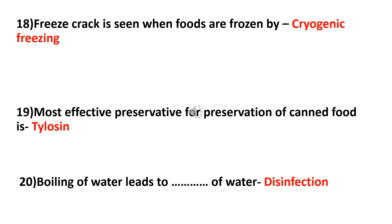Question 19: What is the most effective preservative for the preservation of canned food? Thylosine is the most effective preservative for the preservation of canned food.